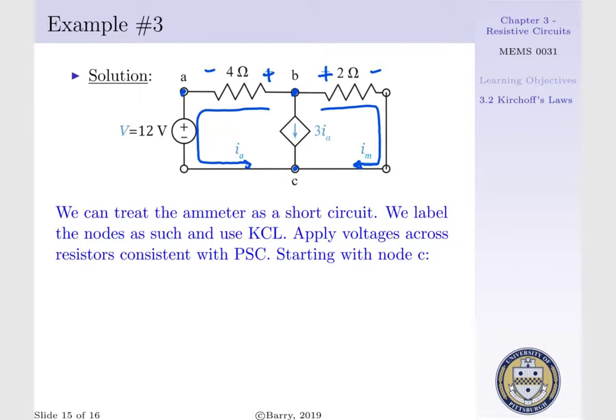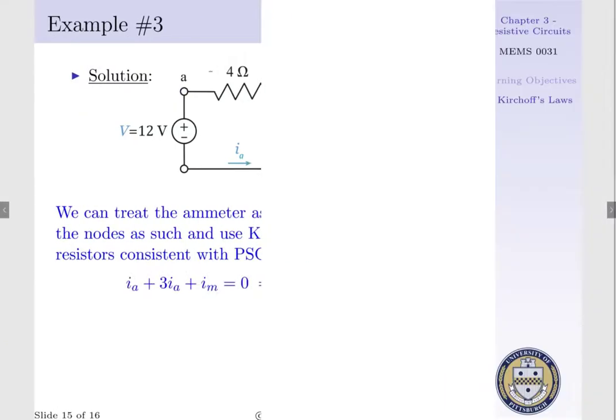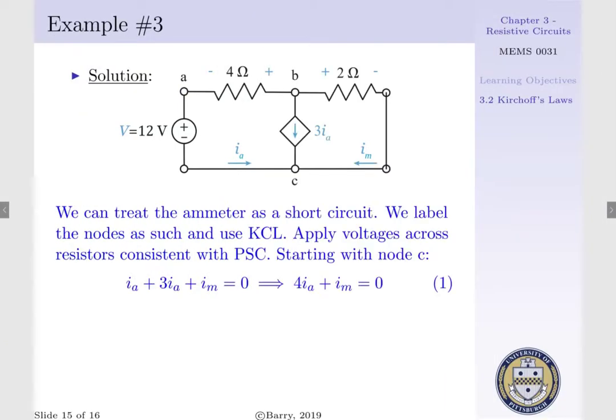Now since we have 3 currents entering node C, we can start by applying KCL at said node. At node C, we have IA plus 3IA plus IM entering. That is, the sum of our currents in is 4IA plus IM, and this is equal to the sum of our currents out, 0. We shall call this equation 1.